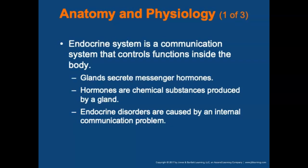The anatomy and physiology of the endocrine system: it is a communication system that controls functions inside the body. Endocrine glands excrete messenger hormones — chemical substances produced by those glands — that travel through the blood to end organs, tissues, or cells that they affect. When they arrive, the message is received and an action takes place. Endocrine disorders are caused by an internal communication problem. If a gland is not functioning normally, it may produce either more hormones, which is hypersecretion, or not enough hormones, which is hyposecretion. A gland may also be functioning correctly, but the receiving organ may not always respond.